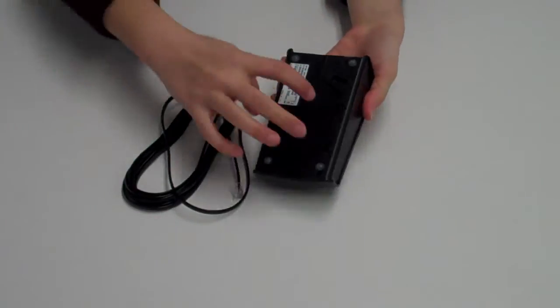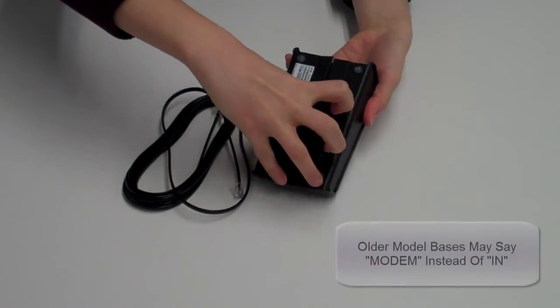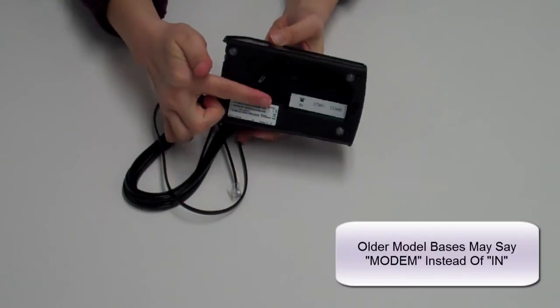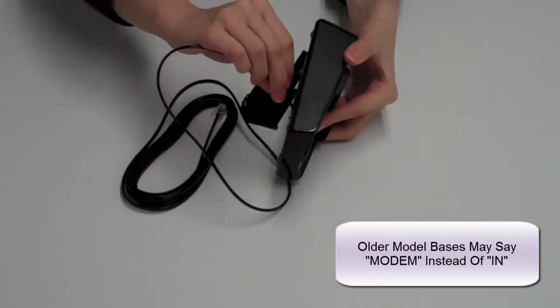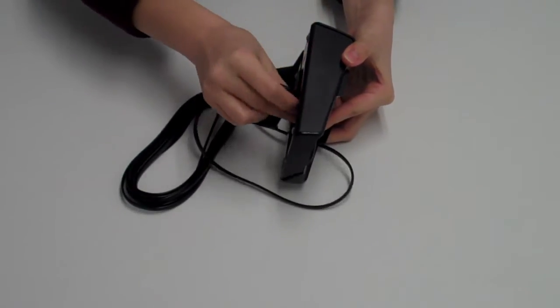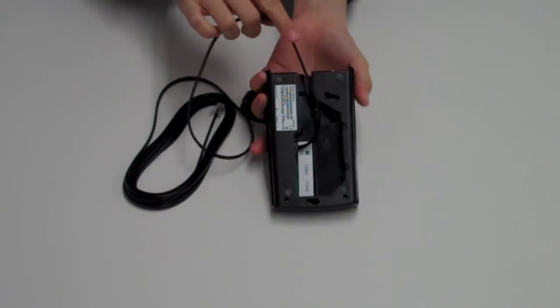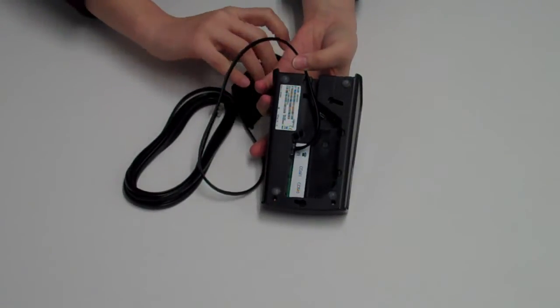For dial-up modem cable routing, open up the bottom of the terminal and find the port adjacent to the phone icon with text labeled IN. Connect one end of the phone cable into that port and route the cable out of the base through the open slot. To finish, replace the bottom cover of the base.